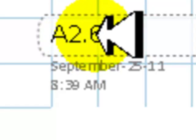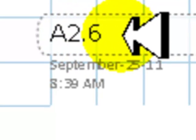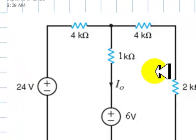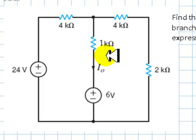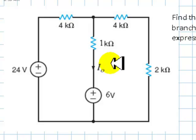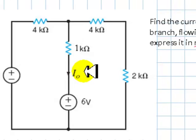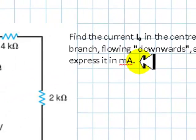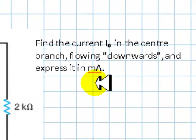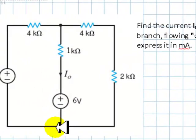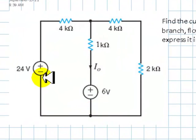Assignment number two, question six: in the circuit, find the current I0 in the center branch flowing downwards, and express that current in milliamps. This is a perfect case for MNA. We identify the true nodes.